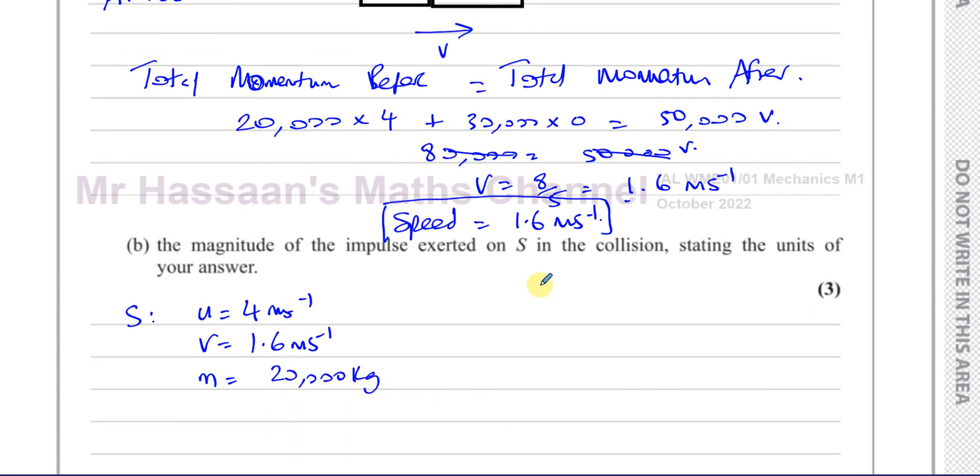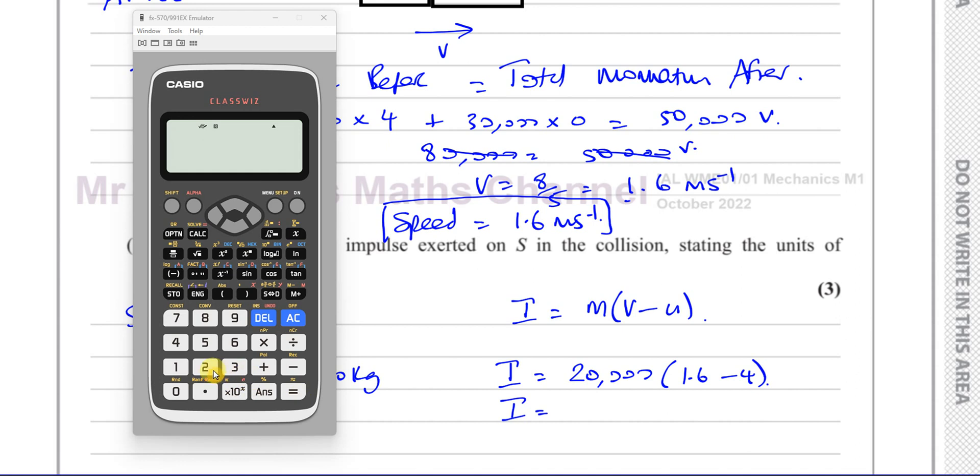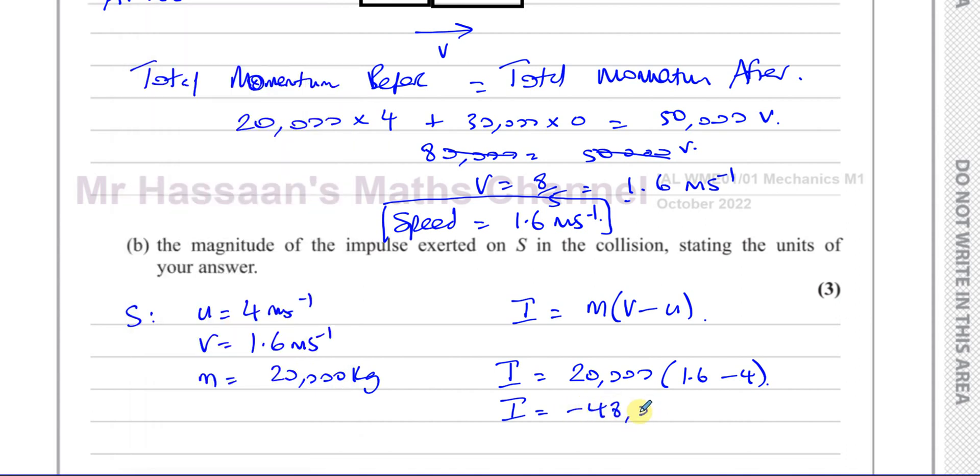So we know that the impulse is basically the change in momentum. So it's M times the change in speed. So the impulse is going to be its mass, which is 20,000, times the change in speed, which is 1.6 minus 4. So this will give us the impulse. So you have 20,000 times 1.6 minus 4, which gives us minus 48,000, minus 48,000 newton seconds. That's the units of impulse.